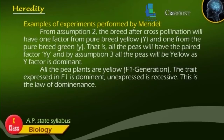From Assumption 2, the breed after cross-pollination will have one factor from the pure breed yellow (capital Y) and one from the pure breed green (small y). That is, all the peas will have the paired factor capital Y small y. All the peas will be yellow as the Y factor is dominant. All the pea plants are yellow in the F1 generation. The trait expressed in F1 is dominant; the unexpressed is recessive. This is the Law of Dominance.